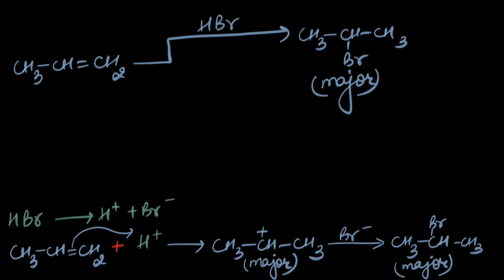The electron dense pi bond goes for this proton, takes up this proton, forms the most stable carbocation as the major product. And this more stable carbocation is later attacked by Br- and we get the major product.